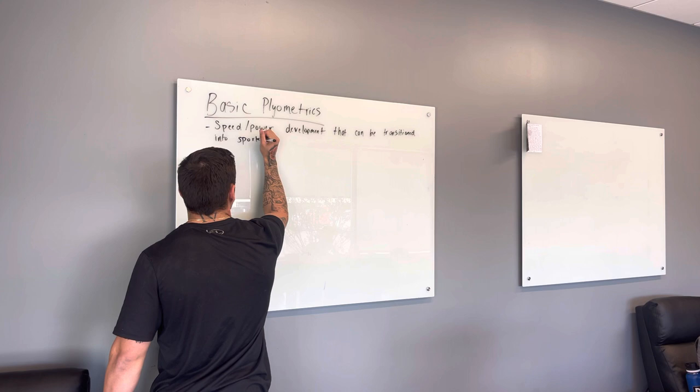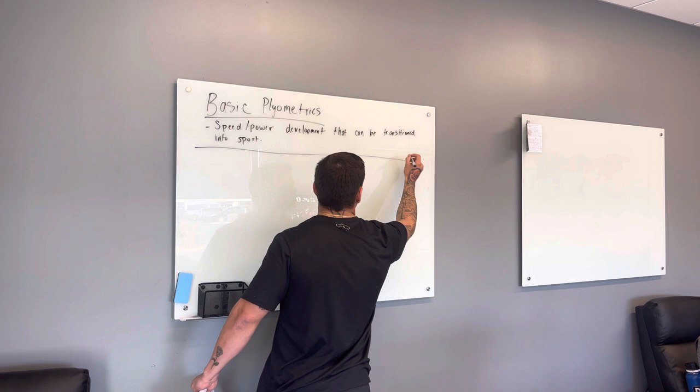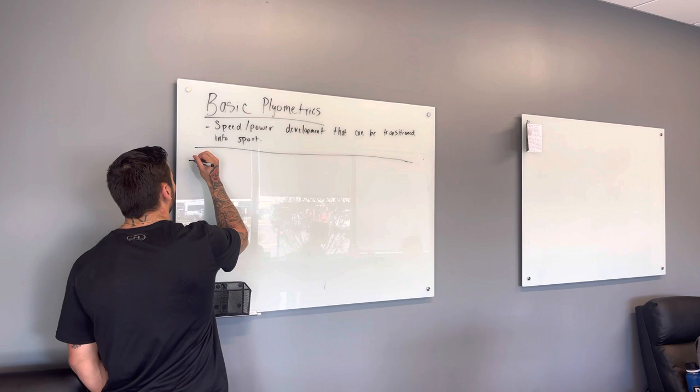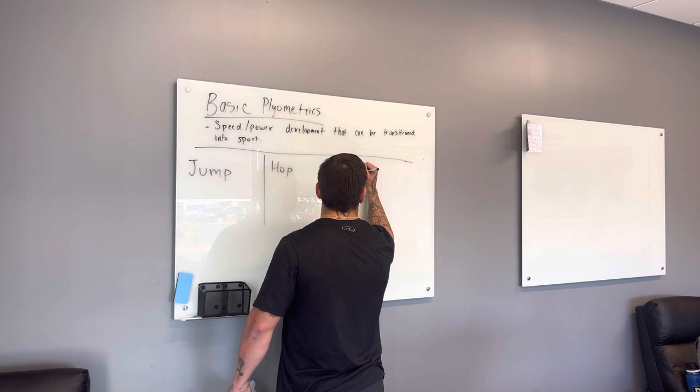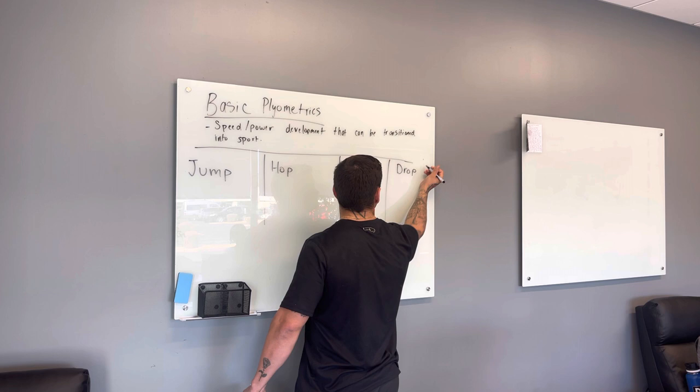Today we're going to cover some basics of plyometrics. We'll go through some definitions and then try some of them out. When we go through basic plyometrics there are usually about four terms. We'll look at: jump, hop, bound, and drop.